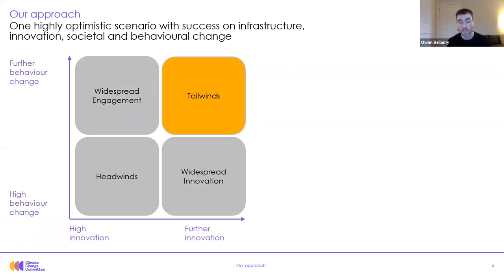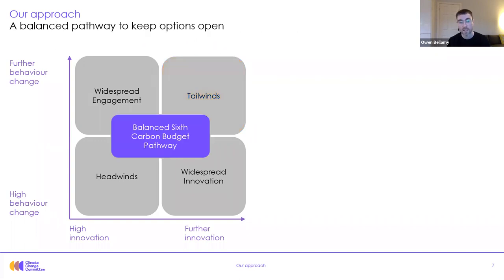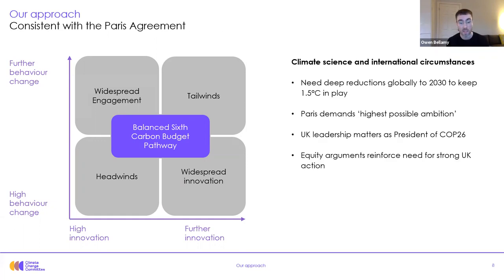The tailwind scenario combines the extra behaviour change from the engagement scenario and the extra innovation from the innovation scenario into a very high-end optimistic scenario which actually gets to net zero before 2050. And lastly, we have a central balanced pathway which the sixth carbon budget recommendation is based on, designed to keep open the option of achieving all of those exploratory scenarios by 2050 on the path to the sixth carbon budget in 2035.